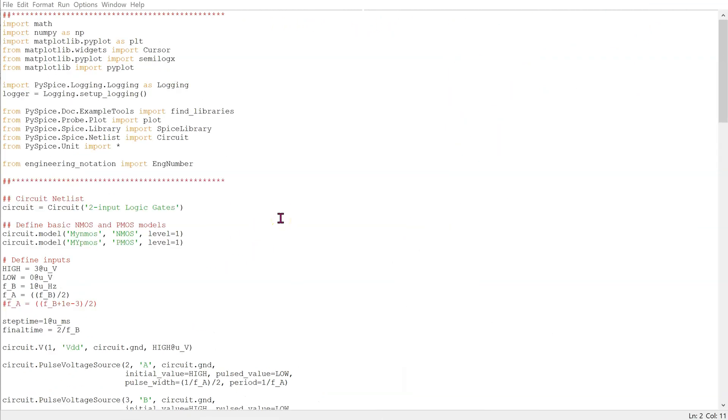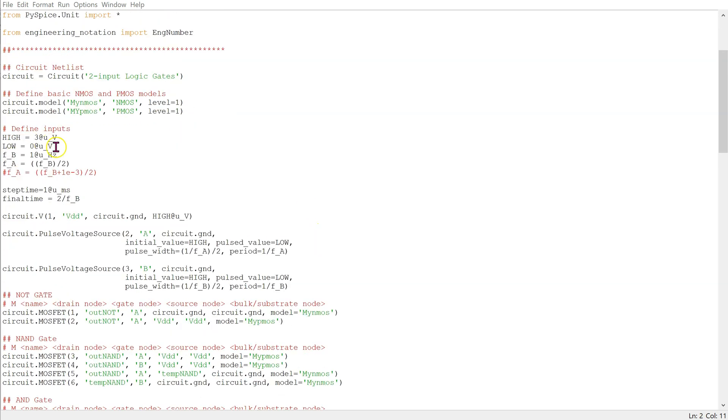This is the Python script to simulate and verify the truth table of basic two input logic gates. The code is available in the comments section below. We have standard declarations at the top. We define the inputs as discussed.